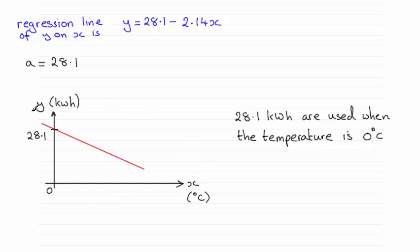I've drawn a sketch graph here of the regression line. You don't have to draw that but it's just to further demonstrate this—we've got our line going down like so, and when x equals 0 you get that value of a, 28.1.